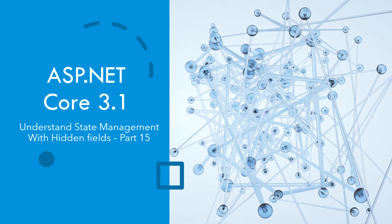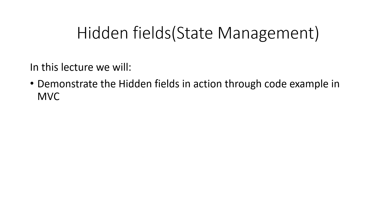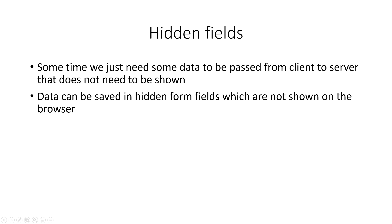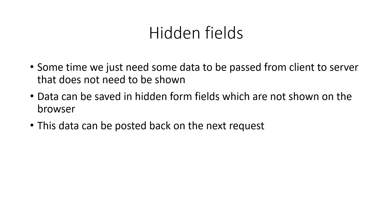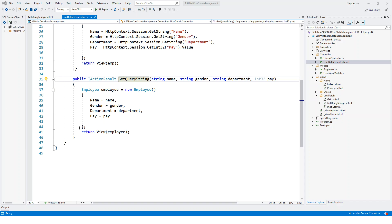Hello and welcome. In this lecture we are going to discuss state management with hidden fields, and this is part 15 of the current playlist. We will demonstrate hidden fields in action through a code example in MVC. Sometimes we just need some data to be passed from client to server that doesn't need to be shown, and that data can be saved in hidden form fields which are not shown on the browser. This data can be posted back on the next request, and the app must revalidate the data stored in hidden fields as it could potentially be tampered on the client side from a security perspective.